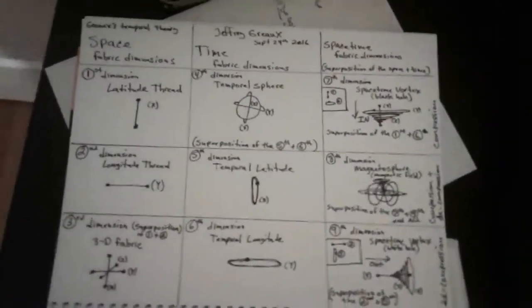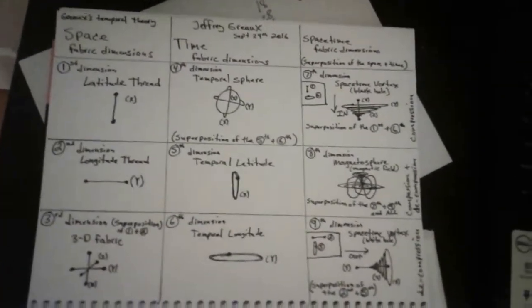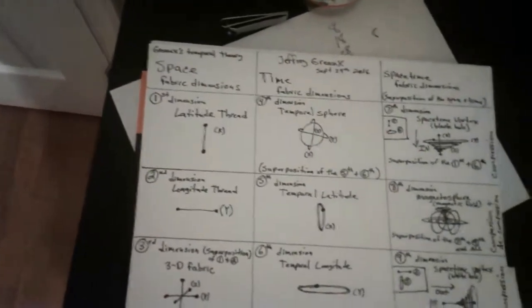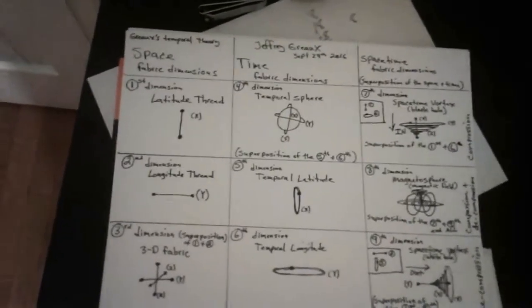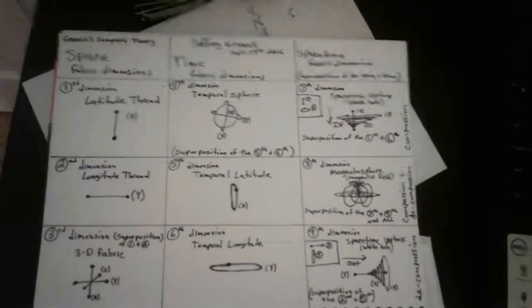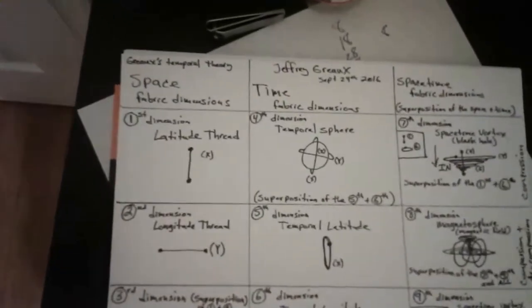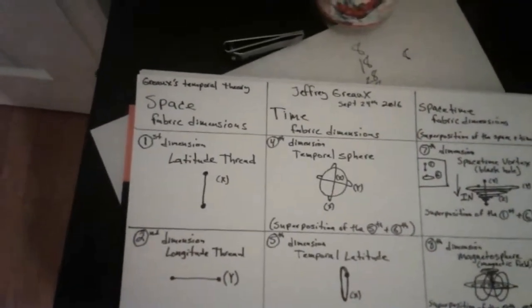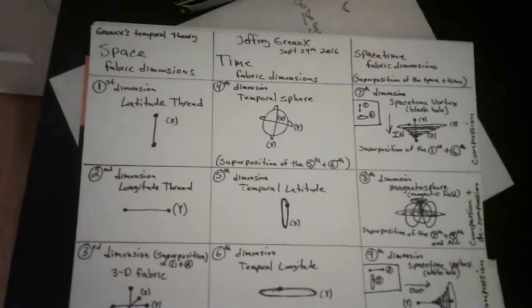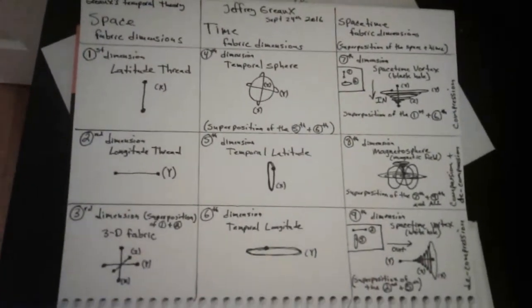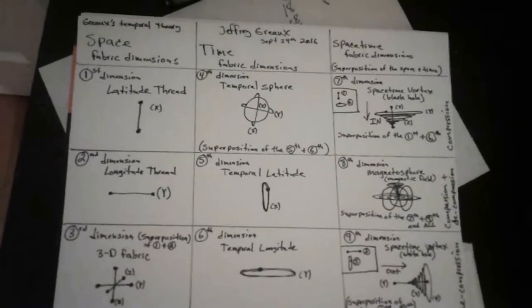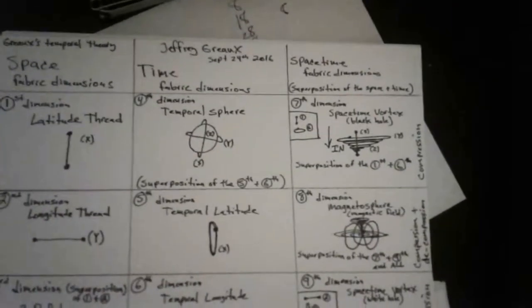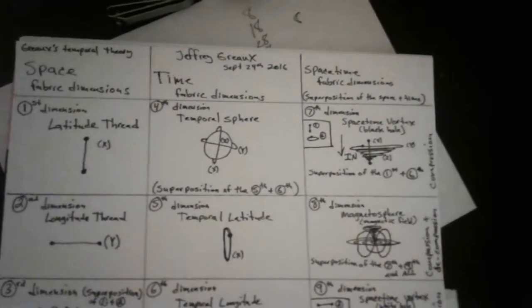In order to fill this space-time column, we take one item from the space column and one item from the time column and put one in each position. So if you take the latitude thread, you can't take temporal latitude — they're the same thing — so you'd have to take temporal longitude. If you take latitude thread and temporal longitude and put them together, you would get a space-time vortex.